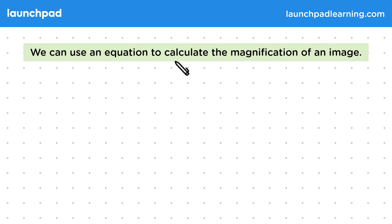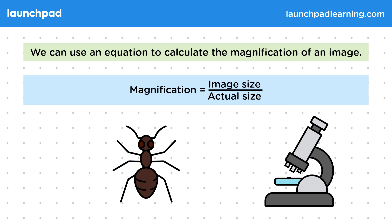We can use an equation to calculate the magnification of an image. And here is the equation: magnification equals image size divided by actual size. For example, if we were to look at an ant through the microscope, this would be the image size. In this case, it is 50 millimetres.